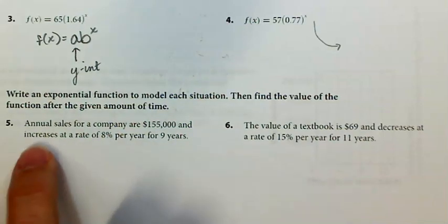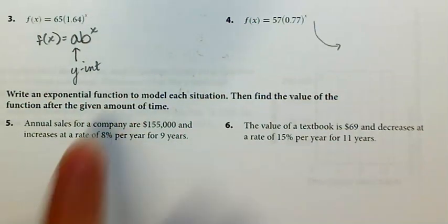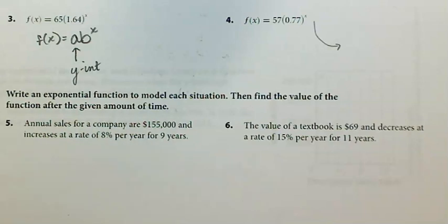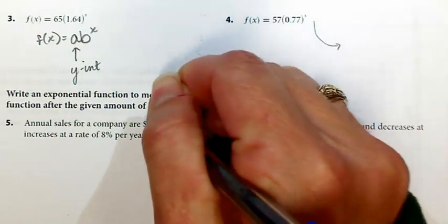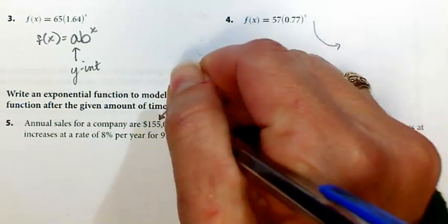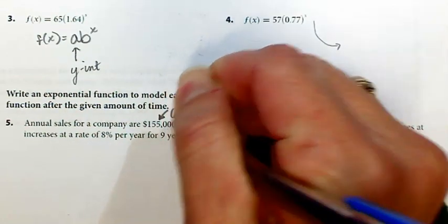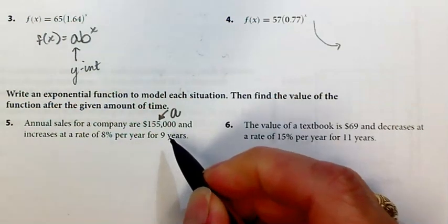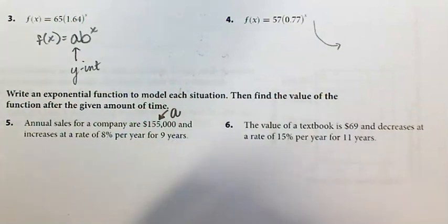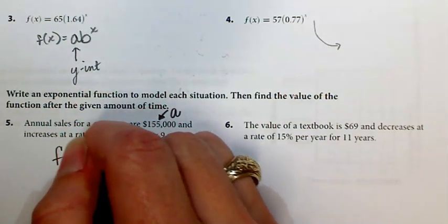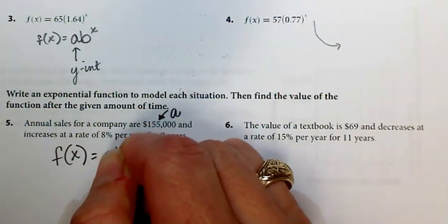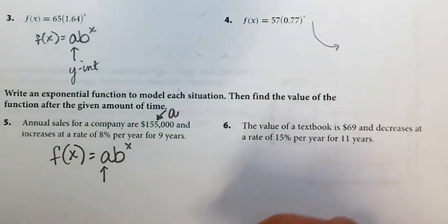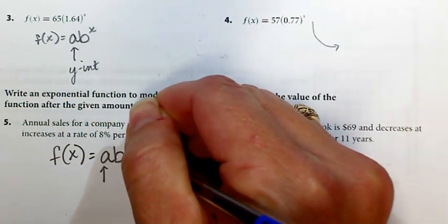Okay, so first of all, increases at a rate of 8% should tell you that this is an exponential growth situation. And a little bit of thinking hopefully will tell you that this is your a because that's the value of your function after zero years. So f(x) equals a·b^x, this is going to be $155,000 when x is zero.